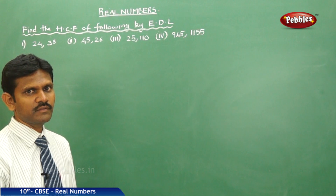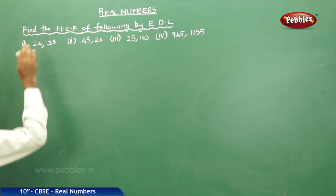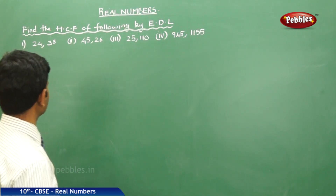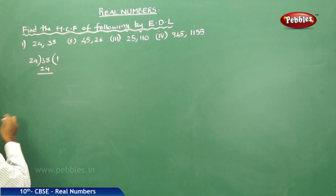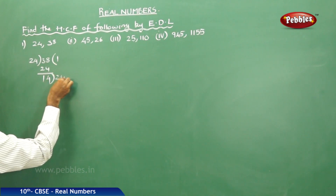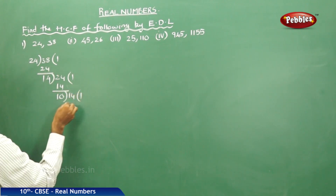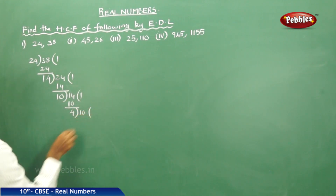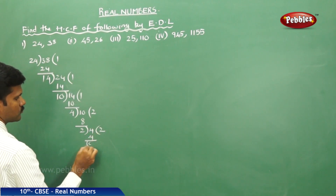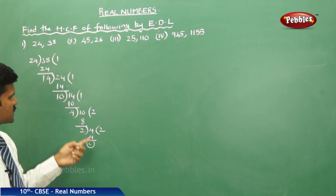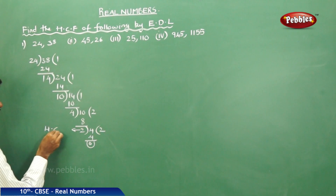Now, how to find the HCF of given numbers using Euclid's Division Lemma. Let us consider the first example: HCF of 24 and 38. First, follow the division method: divide 38 by 24 to get quotient 1 and remainder 14; then 24 by 14 to get remainder 10; then 14 by 10 remainder 4; then 10 by 4 quotient 2 remainder 2; then 4 by 2 remainder 0. Continue the process until you get remainder 0. Therefore, HCF is 2.